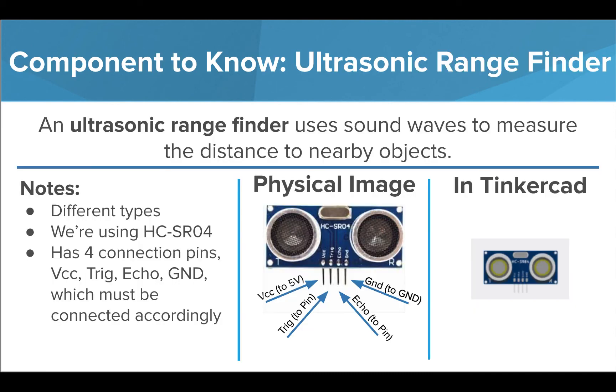During your next exploration, you'll be using a new sensor. An ultrasonic rangefinder is a sensor that measures distance using sound waves. There are different types of ultrasonic rangefinders, but in this course, we'll be using the HC-SR04. There are four connection pins on the sensor that must be plugged correctly into your circuit. Looking at the front of the sensor, the VCC pin is on the left. This pin will be connected to the 5V pin on your Arduino.